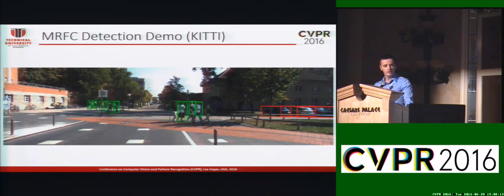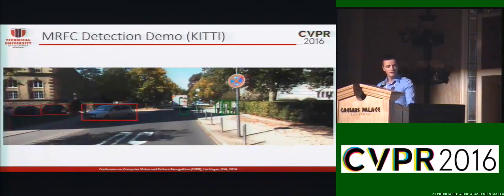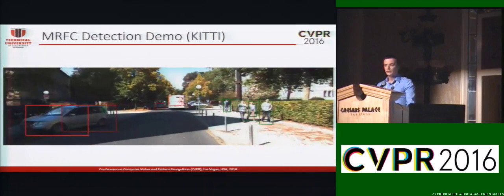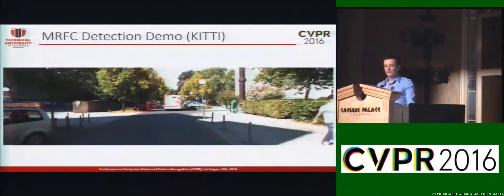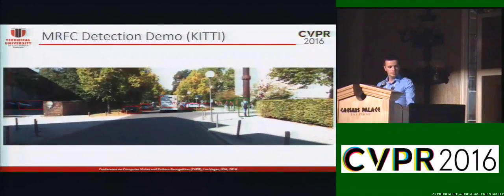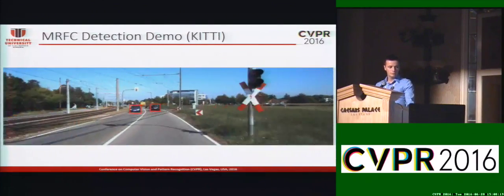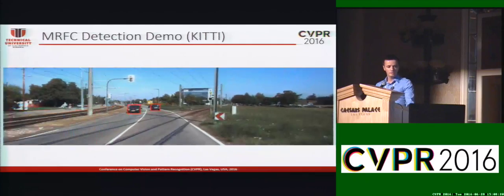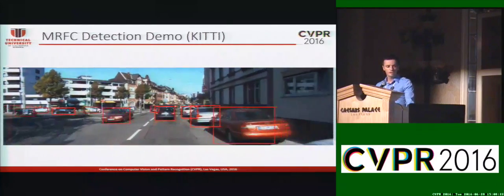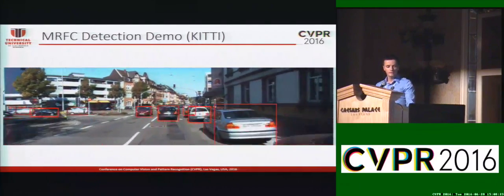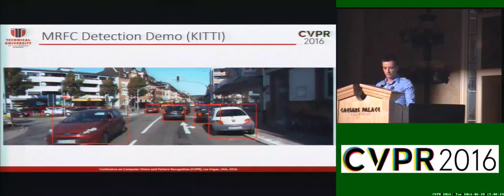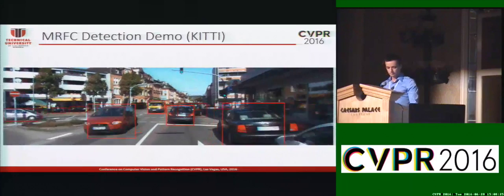Here you can see some detection results on sequences from the KITI dataset. As you can see, we can also extend the detection for cars using multiple detectors for different aspect ratios.